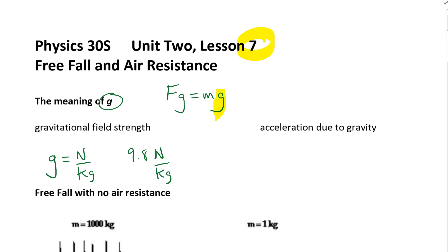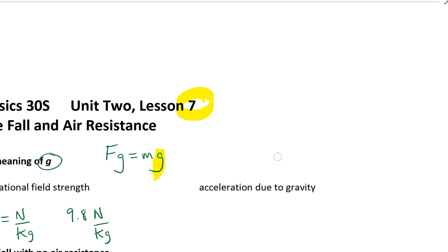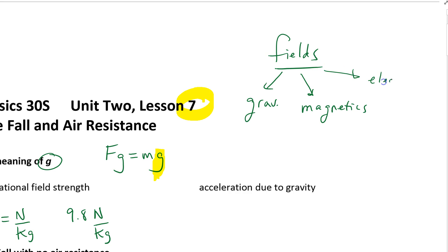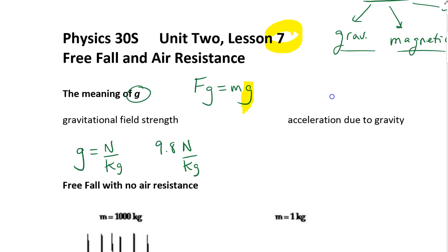There are different types of fields. We have gravitational fields. We have magnetic fields. And if you've played with magnets, you know that there's a force between magnets and they don't have to be touching — that's the idea of fields. It's a non-contact force. Gravitational field: the moon is attracted to the Earth without actually touching it. And the last one are electric fields. We're going to be talking about fields more in this course, so I'm not going to say too much.